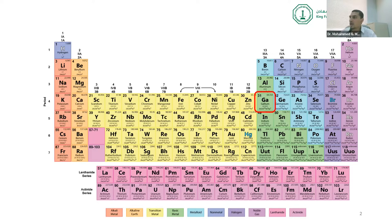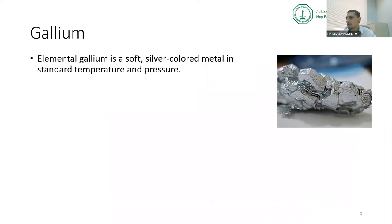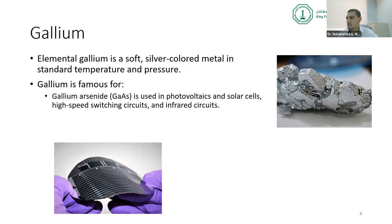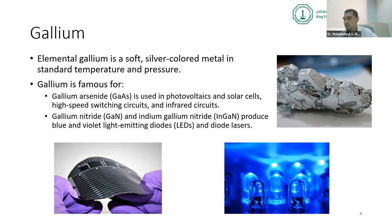Gallium is a soft, silver-colored metal. Most people know gallium for gallium arsenide, used in photovoltaics and solar cells, and gallium nitride or indium gallium nitride, used in LEDs — very serious and important industries. That's why gallium is considered one of the strategic elements in some countries like the United States. But what I'm going to talk about is different from that field.